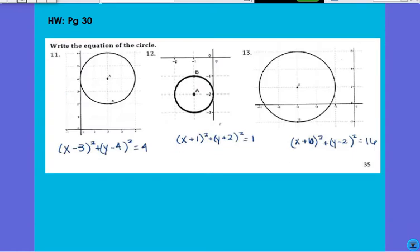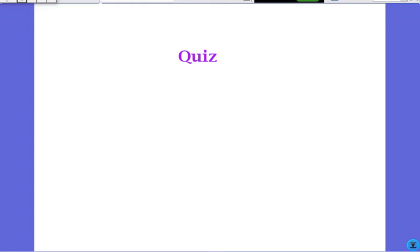All right. Here we have some circles. Write the equation. All right. Find the center. Put it into your equation. Find the radius. Radius should be the same in all four directions. And square it. Just gotta remember to square that radius. If you're not sure, there's a formula sheet and it says radius squared. Feel free to use that formula sheet.